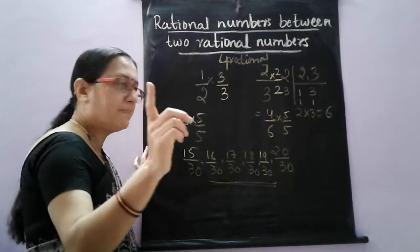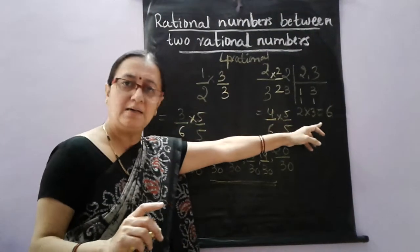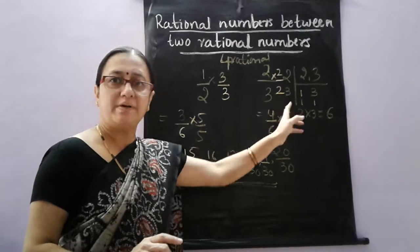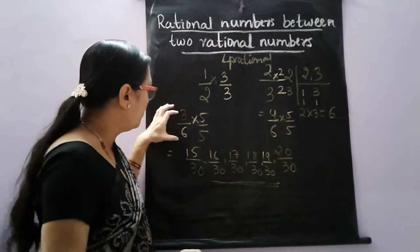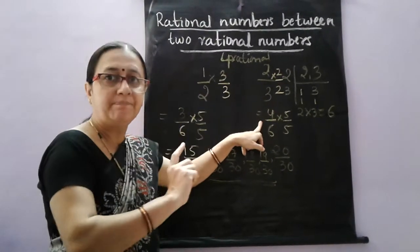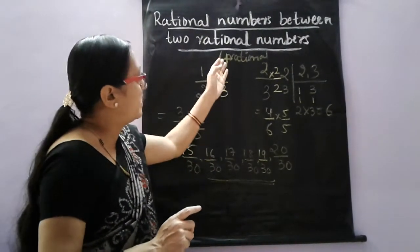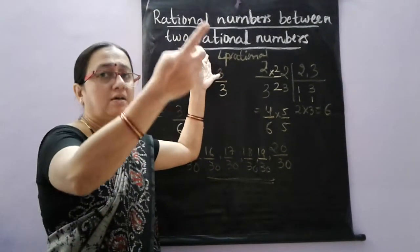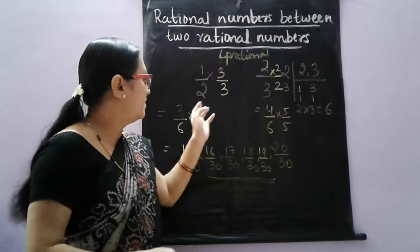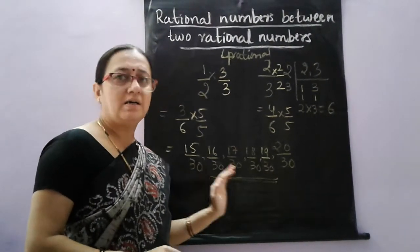So the first step is: take LCM and equate the denominators to the LCM. You will get one more set of equivalent rational numbers. Then multiply again numerator and denominator by n plus 1 — however many you want, plus 1 — and find the rational numbers.